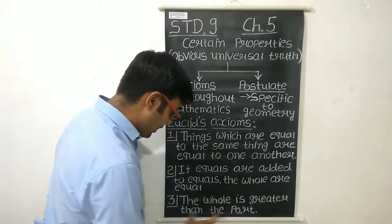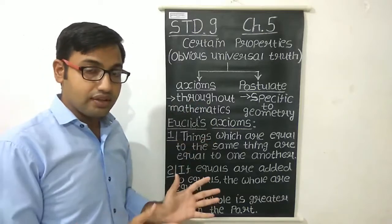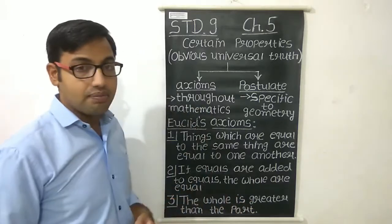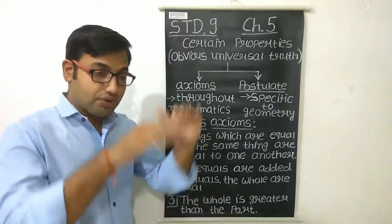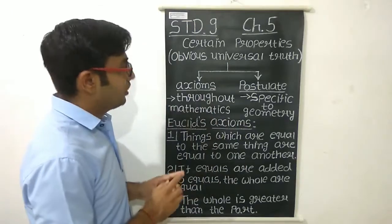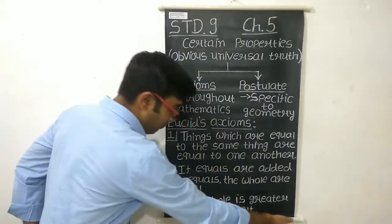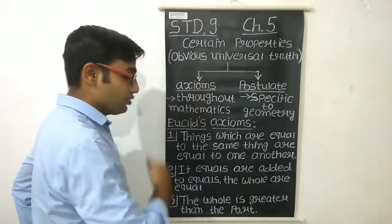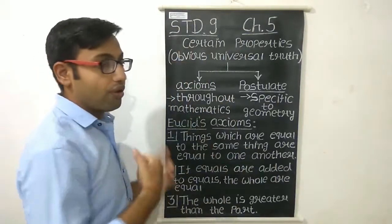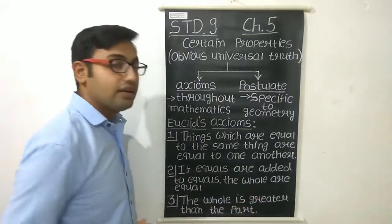The third axiom is: the whole is greater than the part. Whole means the total area or total thing — 100% of anything — and it is greater than the part, which is a portion of the whole. For example, 20% is a part of 100. This whole board contains parts — this upper pipe and this lower pipe are both parts of the whole board.